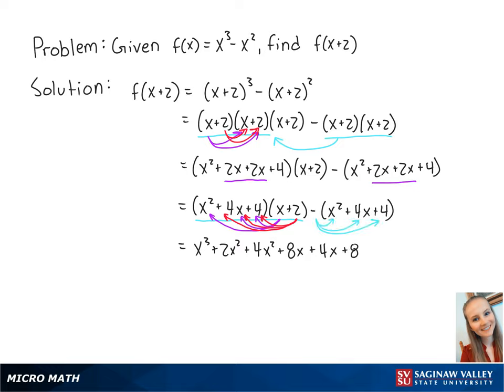And if we distribute the minus sign, we get minus x squared minus 4x minus 4. By combining the like terms, this becomes x cubed plus 5x squared plus 8x plus 4. And this is the final answer.